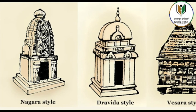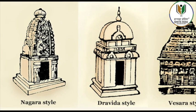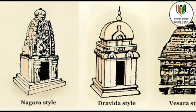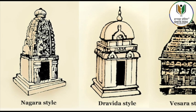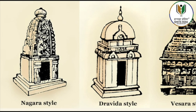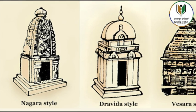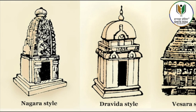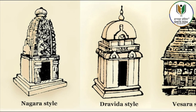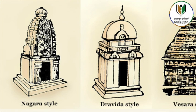Deulas are preceded, as usual, by mandapas called Jagamohana in Odisha. Odisha temples usually have boundary walls. The ground plan of the main temple is almost always square, which in the upper reaches of its superstructure becomes circular in the crowning mastaka. Compartments and niches are generally square, the exterior of the temples are lavishly carved, and their interiors generally quite bare.